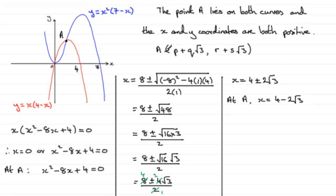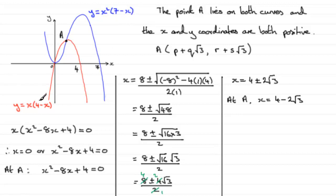We can see this is in the required format — P would be 4 and Q, be careful, would be minus 2. We've got the x coordinate now. All we need is the y coordinate corresponding to this. We substitute into the simpler of the two equations, which doesn't involve x squared. I'll leave it as an exercise to substitute into the other equation and check you get the same answer.